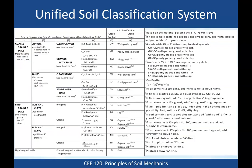Basically everything you need to know about USCS soil classification is in this table. It's a little tricky to follow, but it's logical. There are footnotes A through Q, so you have to pay attention to them because you don't always just follow the flowchart. The table in your textbook actually has some mistakes — this corrected version will be made available through the course website.